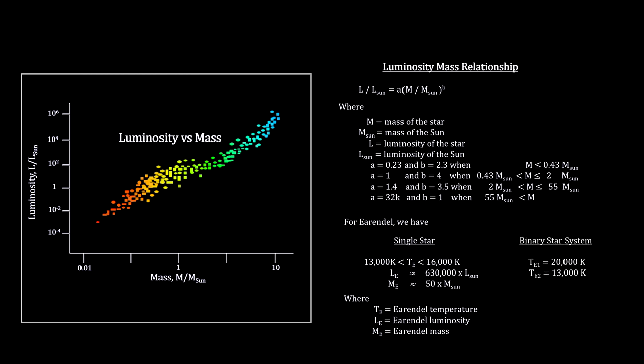Webb's analysis added the possibility that Arendelle is a binary star system with one star at 20,000 degrees and the other around 13,000 degrees.